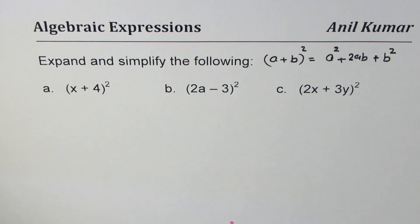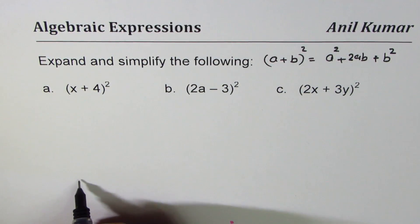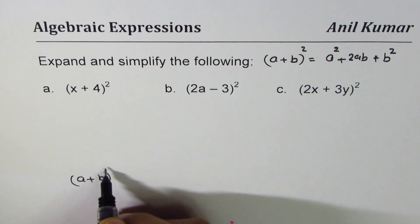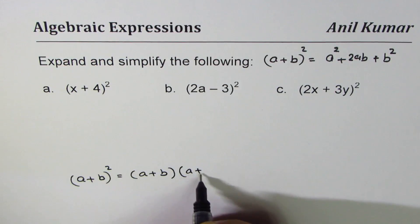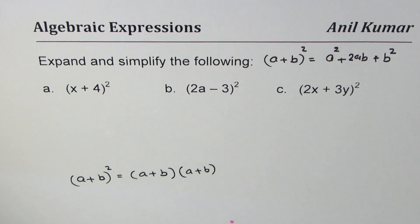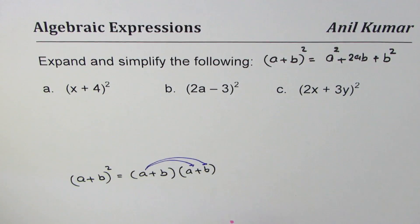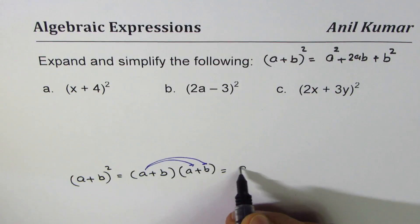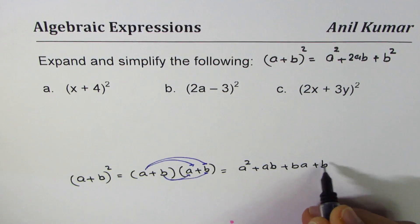So since I'm applying this formula let me show you how we get it. We'll begin with a plus b whole square which could be written as a plus b times a plus b. So when you multiply you have to multiply a with both. That's the distributive property.